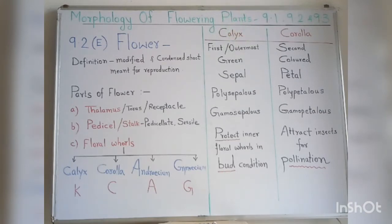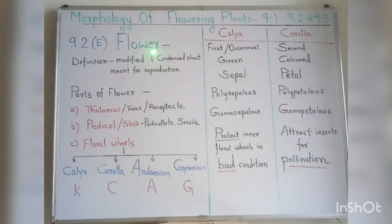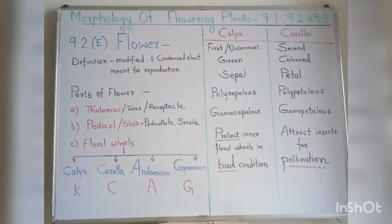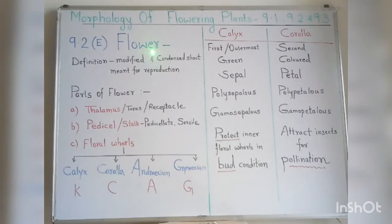The different parts of plants are root, stem, leaves, flower, fruits, and seeds. Today we'll be starting with the part called the flower. The definition states that a flower is a highly modified and condensed shoot which is meant for the process of reproduction. This is the reproductive part of the plant, with the help of which propagation of the plant takes place.